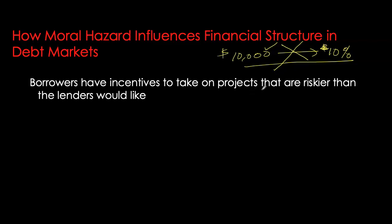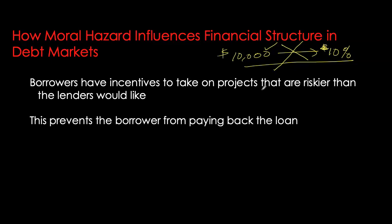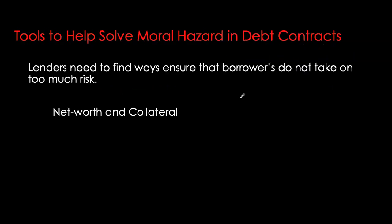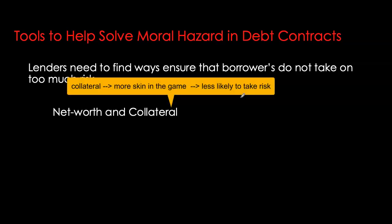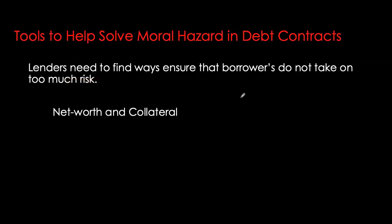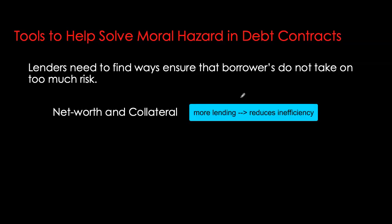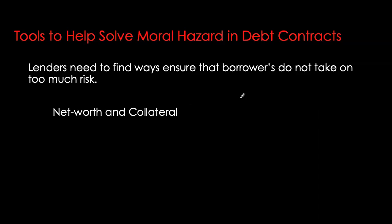To reduce moral hazard in debt contracts, we need to ensure borrowers won't engage in activities that increase default risk. One way is posting collateral — just as collateral reduces adverse selection, it also plays a huge role in reducing moral hazard. The bigger the collateral, the more the borrower has at stake; this is called having more skin in the game. With more skin in the game, the temptation to act immorally is greatly reduced. Likewise, greater net worth means a greater incentive to behave appropriately and a smaller moral hazard problem.